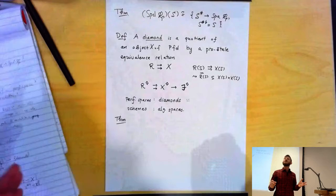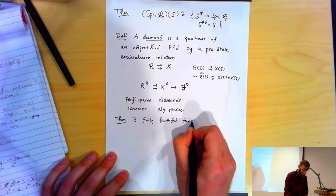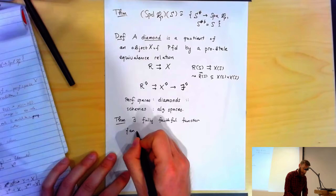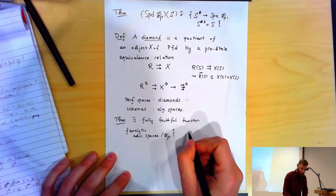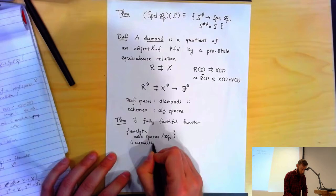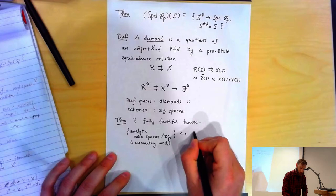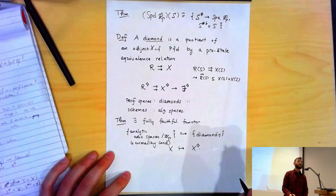What can be done with this new category of diamonds? It contains a very important object, Spd Q_p, which is the quotient of the real perfectoid space Spd(Q_p^{cyc,♭}) by an equivalence relation given by the action of a group. There also exists a fully faithful functor from a large class of adic spaces over Q_p into the category of diamonds. This includes the entire category of rigid spaces over Q_p — so X could be a rigid space.